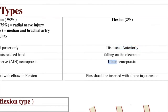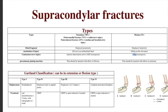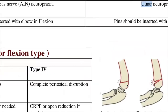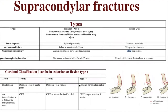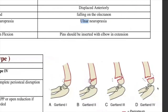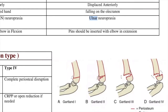The Gartland classification applies to both flexion and extension types. Type 1 is non-displaced — managed by cast and immobilization. Type 2 is displaced on the sagittal plane only — managed by closed reduction and percutaneous pinning. Type 3 is displaced in more than one plane — managed by closed reduction and percutaneous pinning, or open reduction if needed. Type 4 is complete periosteal disruption — managed by closed reduction and percutaneous pinning, or open reduction if needed.